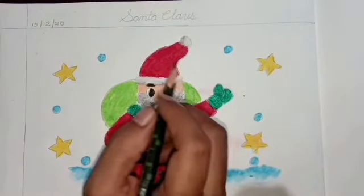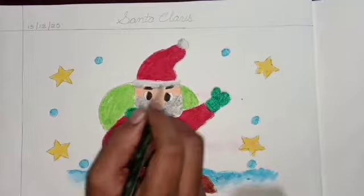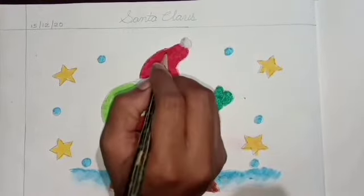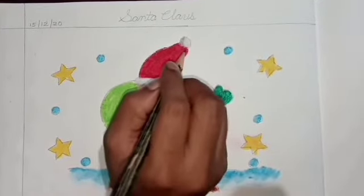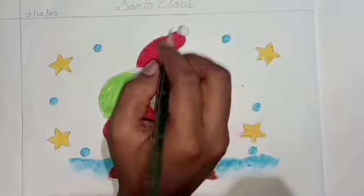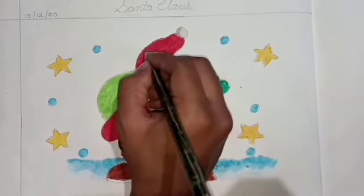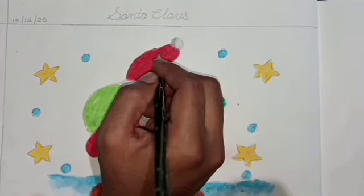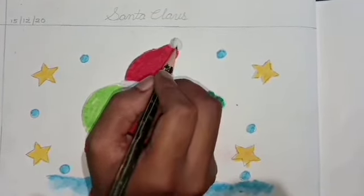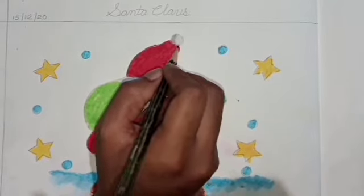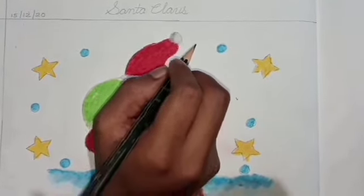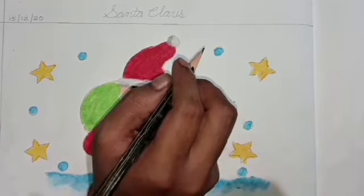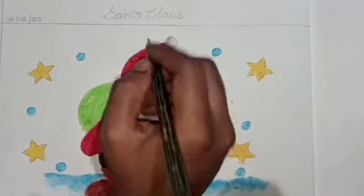Now, we will outline it. For this, you can use 6B or 4B pencil here. Children, when you outline it, do not press the pencil too hard as it will spoil the next page and we will see its impression on the next page.